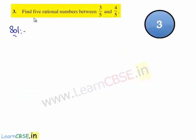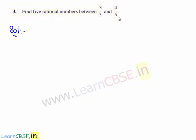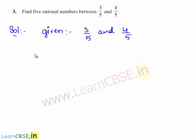Now let us move on to the third question: find 5 rational numbers between 3 by 5 and 4 by 5. The given two rational numbers are 3 by 5 and 4 by 5. To obtain 5 rational numbers between them, let us first consider 3 by 5 and multiply it with 10 on both the numerator and denominator. This gives 3 times 10 is 30 by 5 times 10 is 50.